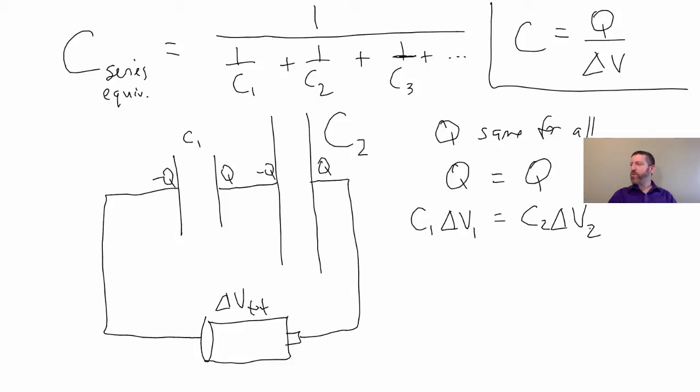So what does that mean about the voltage drops across each one of these? Well, let's think of it this way. Let's first think of it conceptually. Both of them have the same amount of charge. This is a bigger capacitance right here. C2 is much bigger.